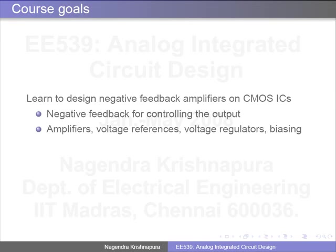The final theme is to get a negative feedback amplifier working. Because it involves feedback, it will require making it stable and achieving sufficient accuracy. The idea is to use negative feedback for controlling the output — these are directly used in amplifiers. We know op-amps: the whole idea of op-amps is to use negative feedback to get accurate circuits. Similarly, with voltage references, that is how you make voltage regulators. We will also cover biasing circuits, and the principles learned can be extended to other circuits.